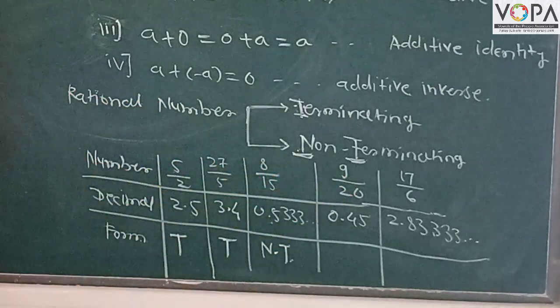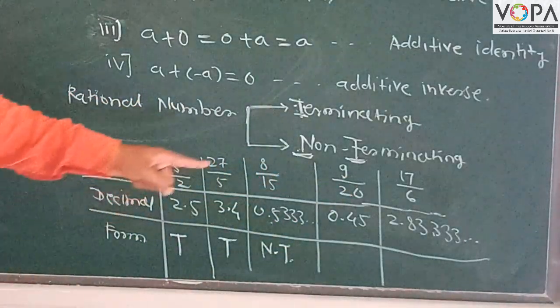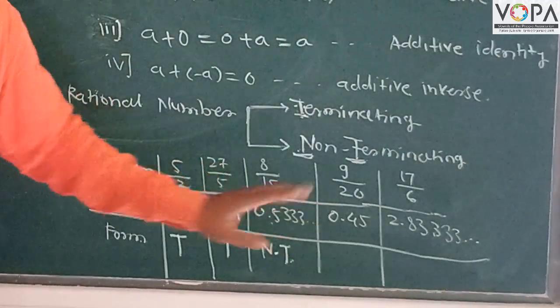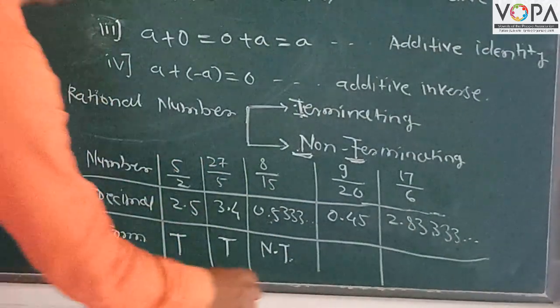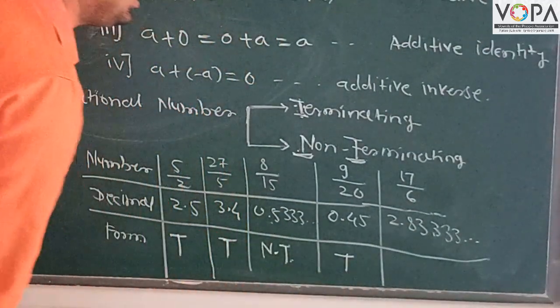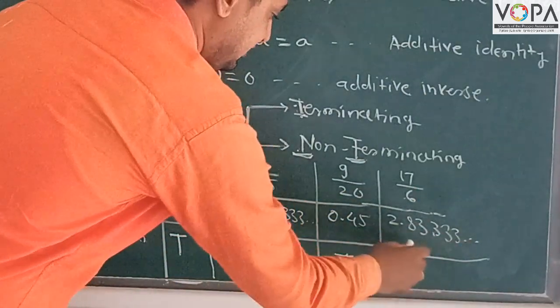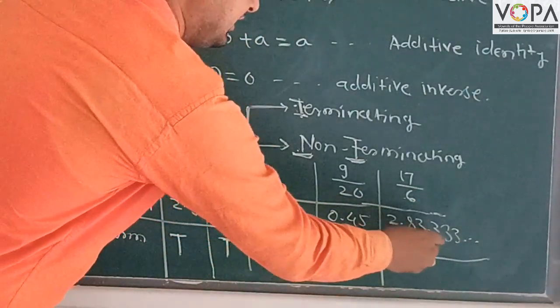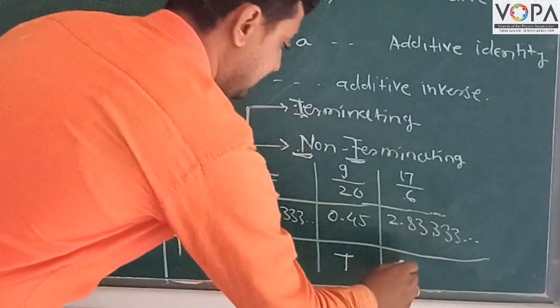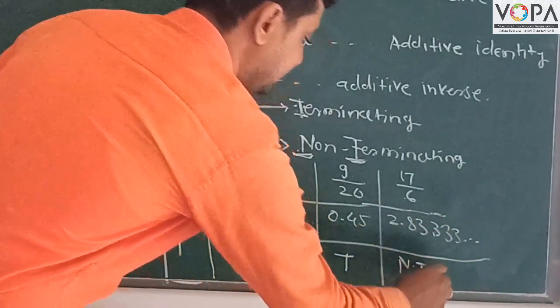Another example is 9/20. Its decimal form is 0.45, and this is a terminating term. 17/6 in decimal form is 2.8333..., and it is a non-terminating term.